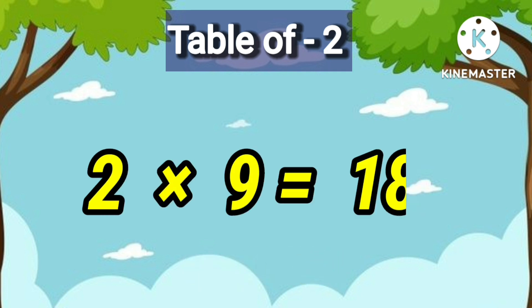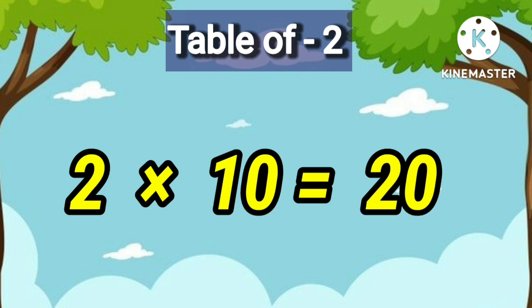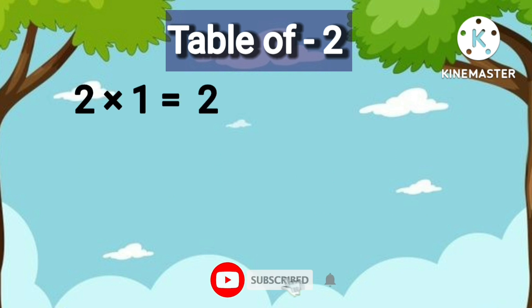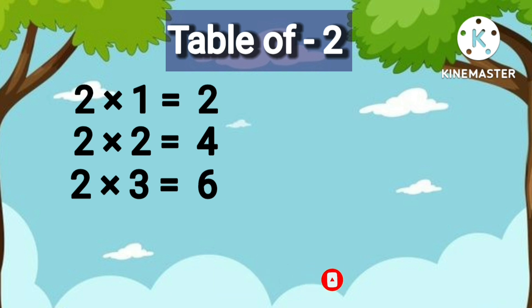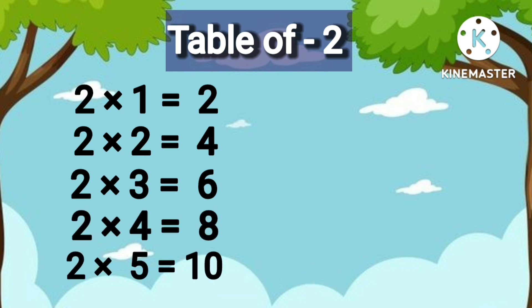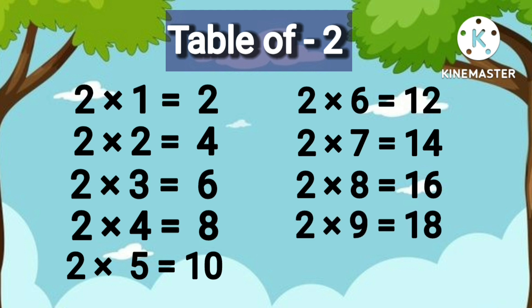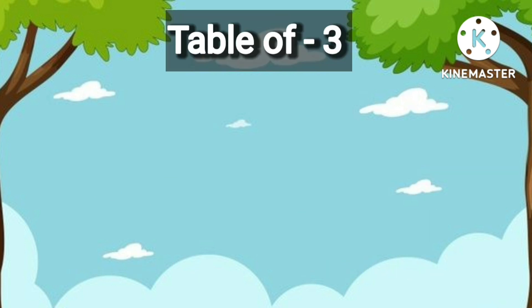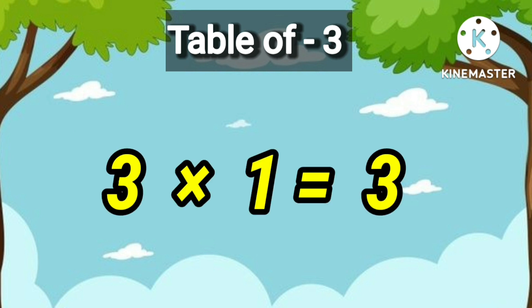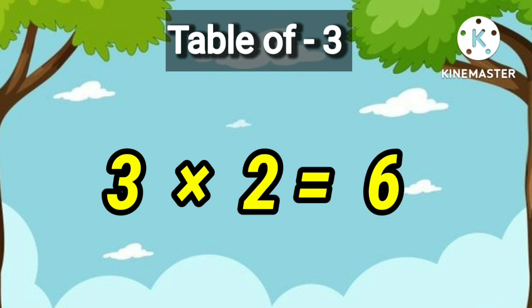2 9's are 18, 2 10's are 20. 2 1's are 2, 2 2's are 4, 2 3's are 6, 2 4's are 8, 2 5's are 10, 2 6's are 12, 2 7's are 14, 2 8's are 16, 2 9's are 18, 2 10's are 20. Table of 3: 3 1's are 3, 3 2's are 6.